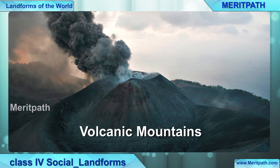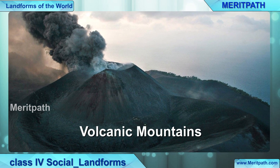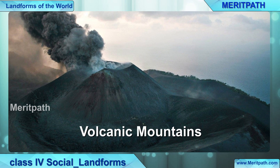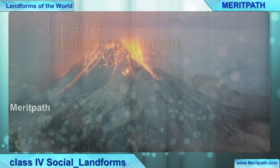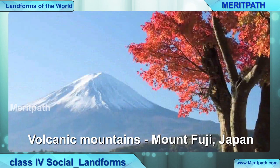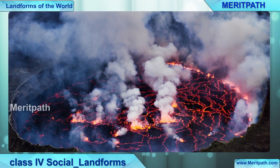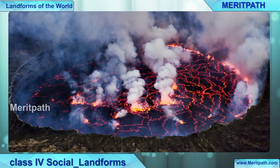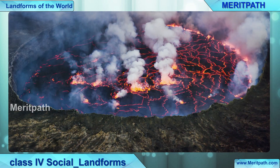Now we will come to volcanic mountains. How are volcanic mountains formed? These are formed by molten rock — from the molten lava from deep inside the earth rising to the surface, forming a volcano. Mount Fuji in Japan is an example of volcanic mountains. You can see in the diagram how the lava is erupted and forming into rocks.